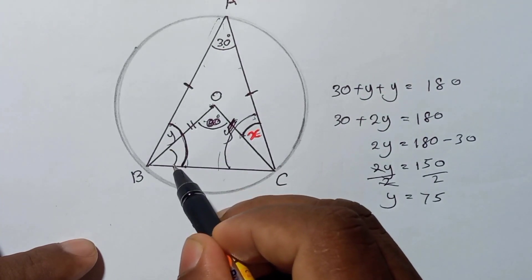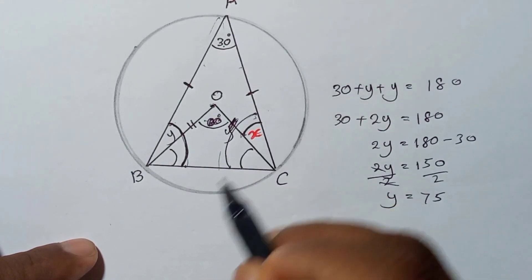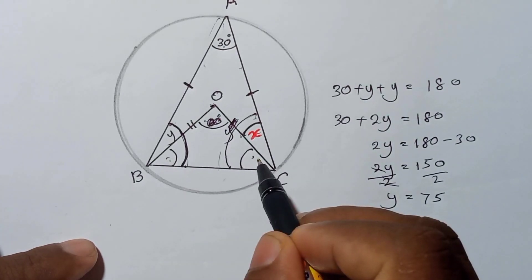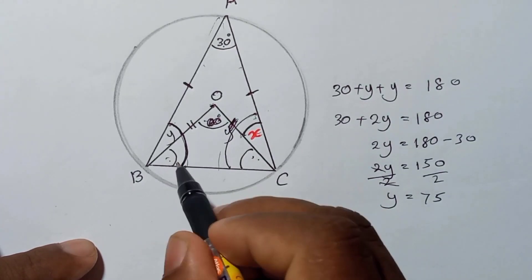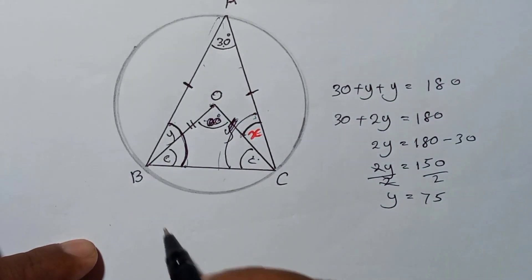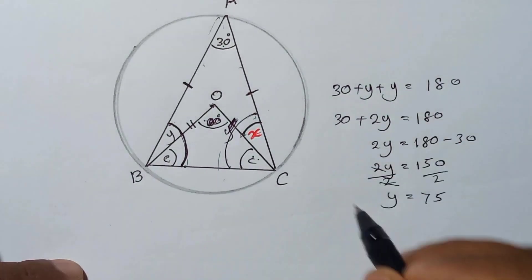So that's why these two are equal, OB equals OC, and that means this is 60. Again, this must be equal to this. If this is 60, this must be equal. So here if I put another letter, call it c.